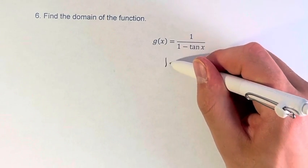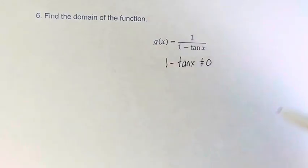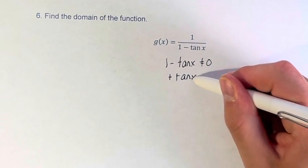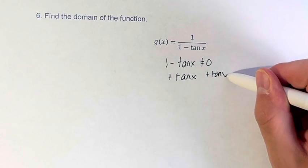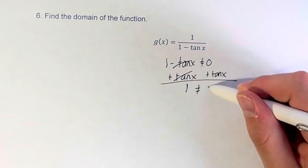So 1 minus tangent of x cannot equal 0. Adding tangent of x to both sides, we get 1 is not equal to tangent of x.